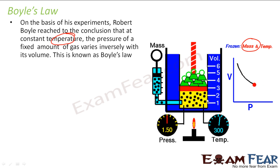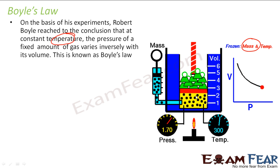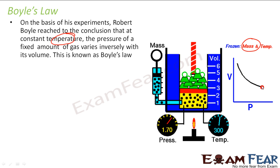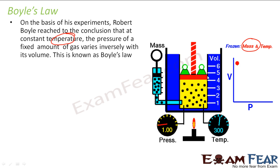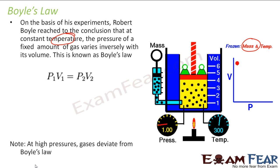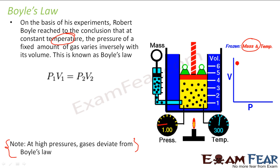In his setup, the mass of the gas and temperature are constant. He increased the pressure and observed that the volume decreases; decreasing the pressure, the volume increases. This is the kind of graph he got, and this law is called Boyle's law. He came to the conclusion that P1V1 = P2V2.